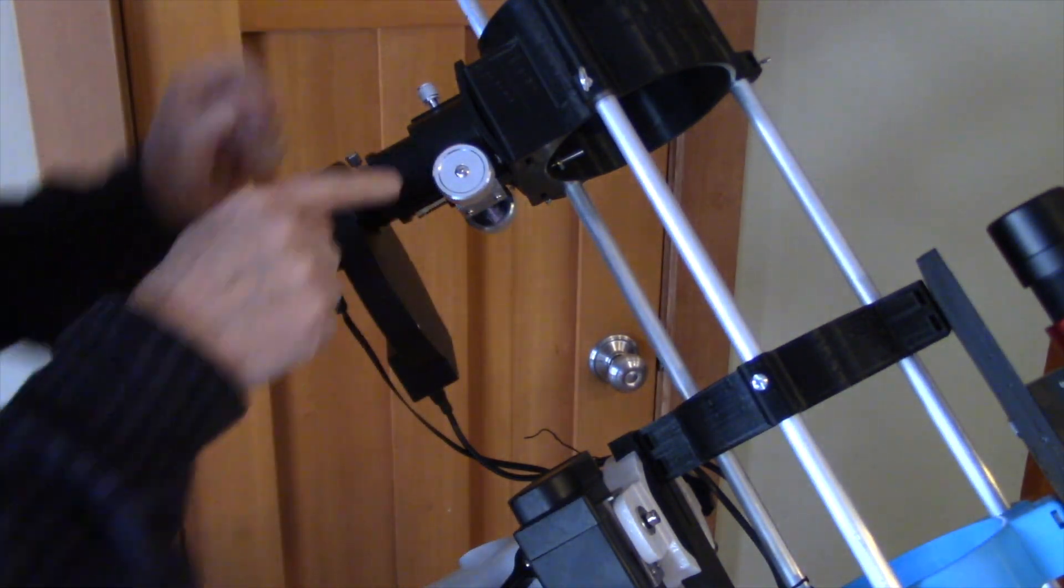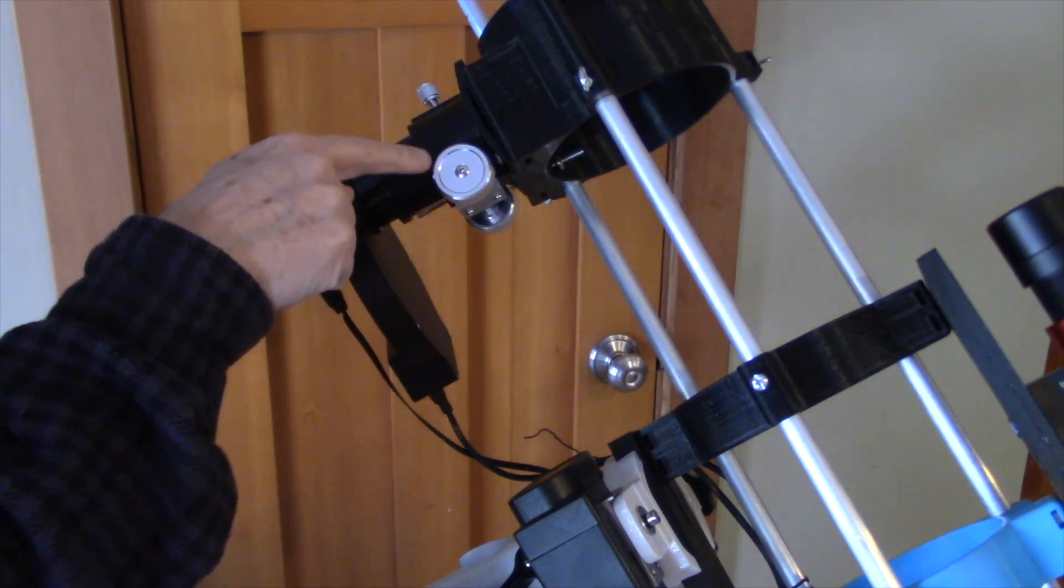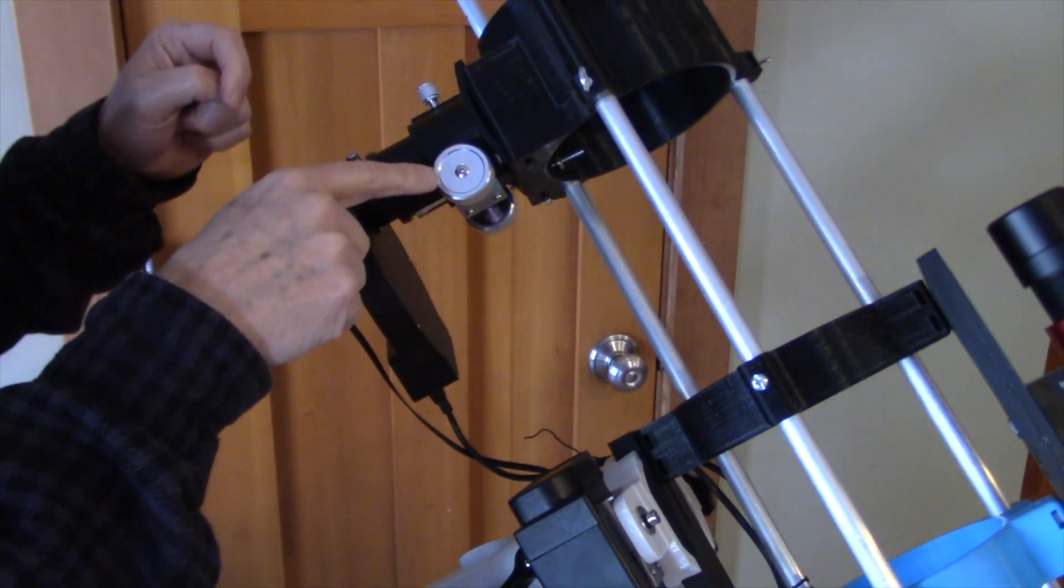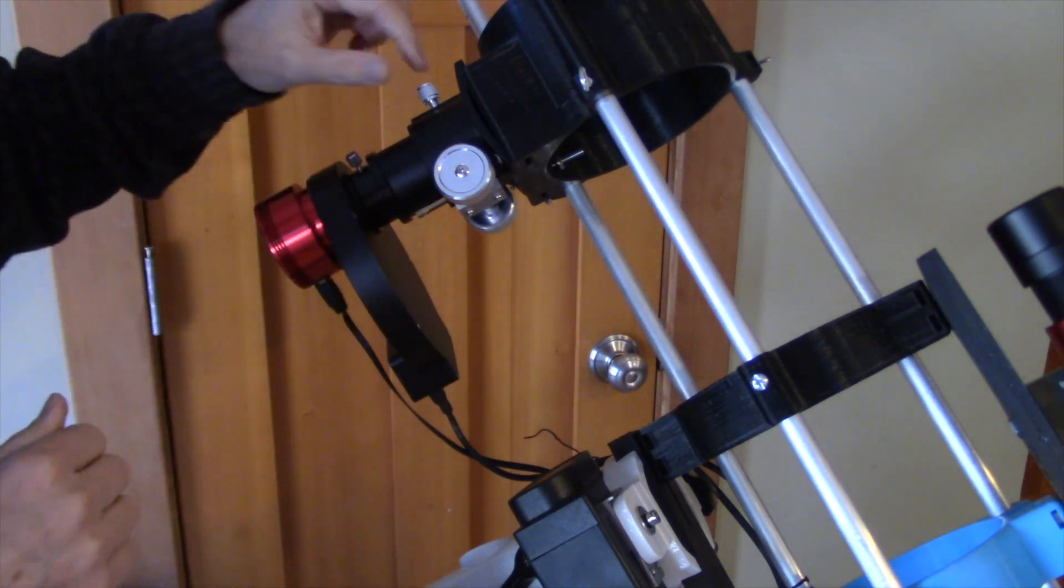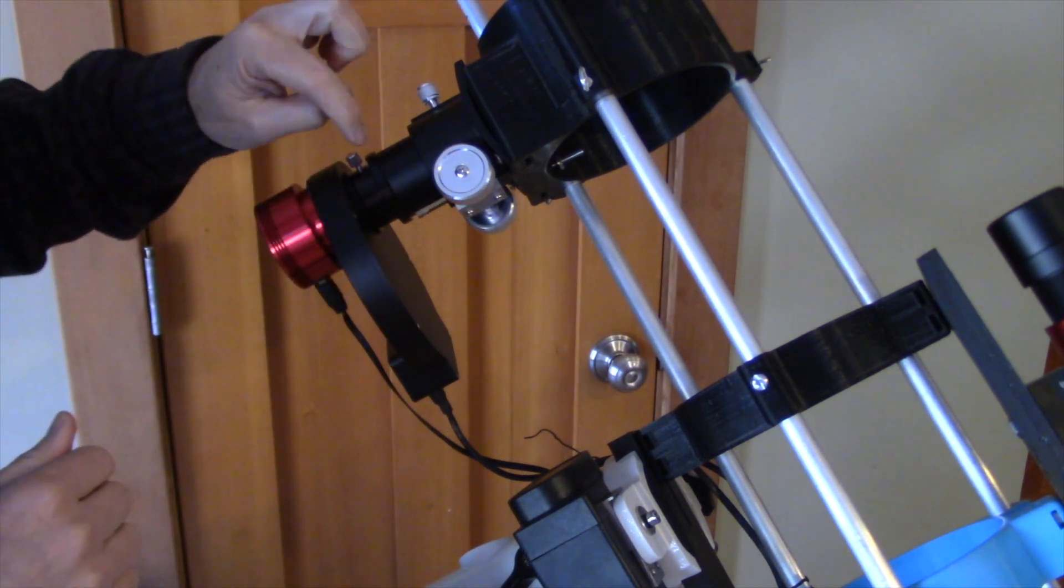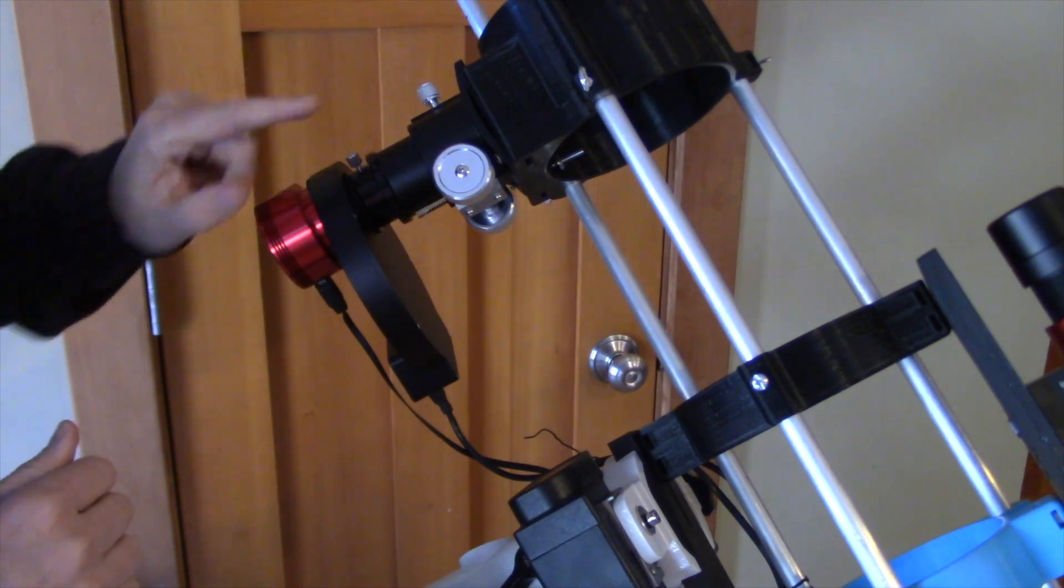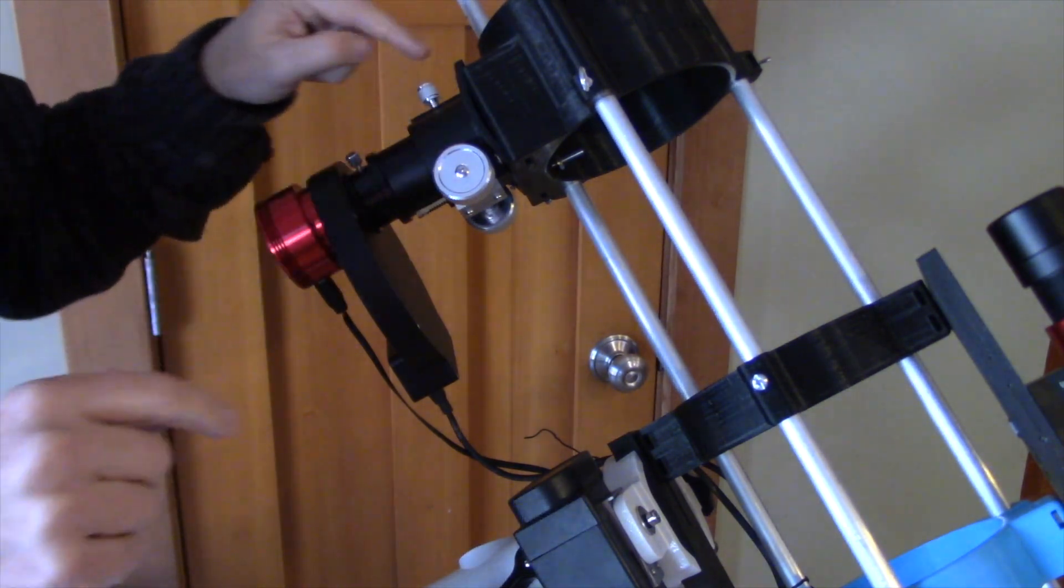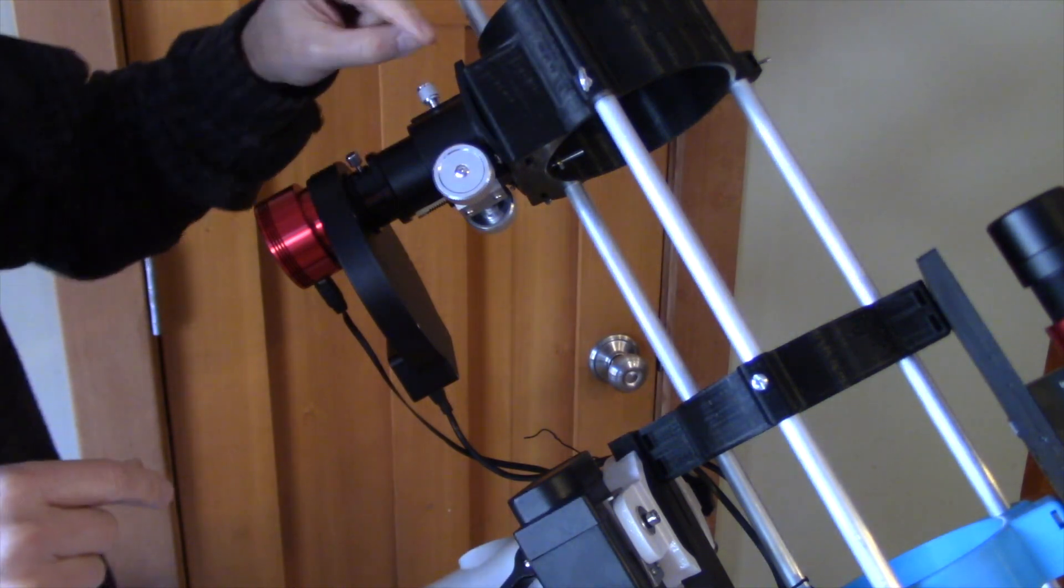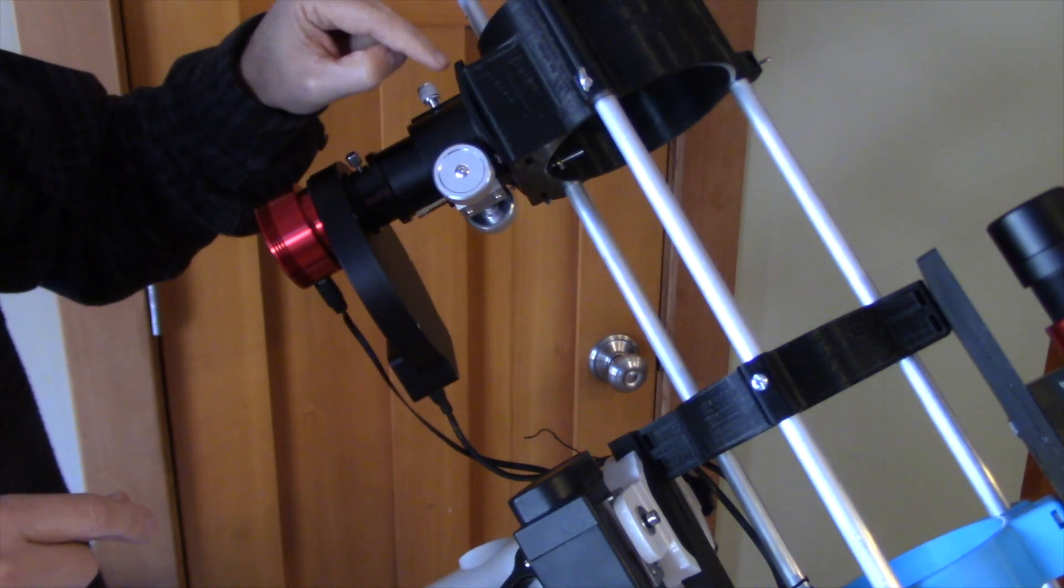So what I did was this. I removed it and I bought this aftermarket non-rotating Crayford type focuser. It's a single speed. We've got a focus lock and a one and a quarter inch eyepiece adapter. And then I just removed it, matched drilled, and just bolted it right to that flat spot.